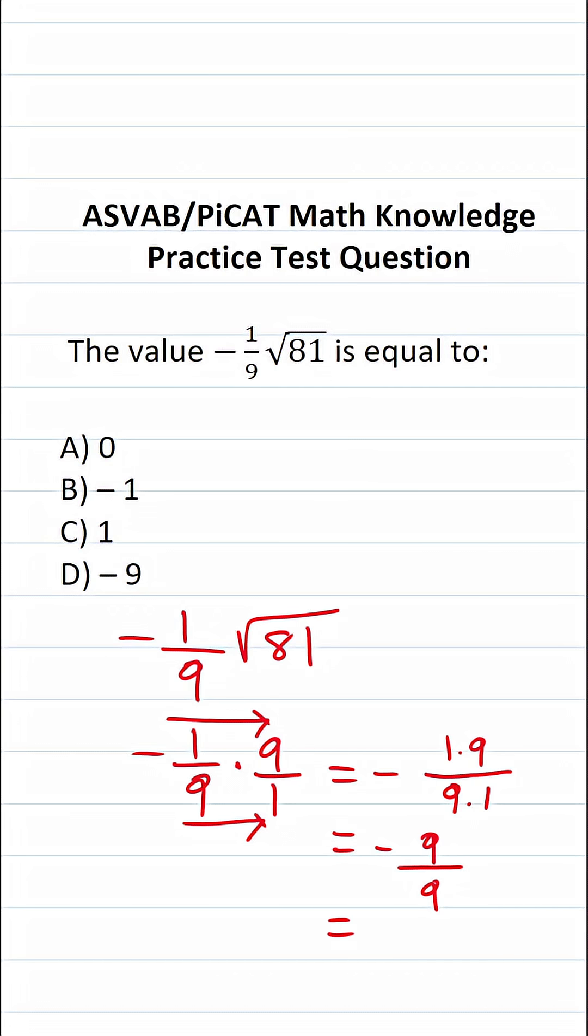This is negative nine over nine. Nine divided by nine is one, so this is negative one. The answer to this question is B.